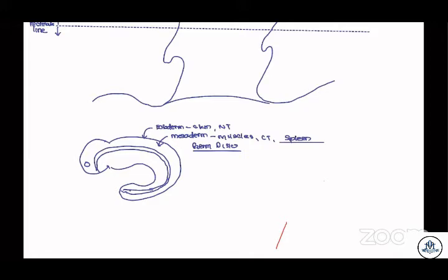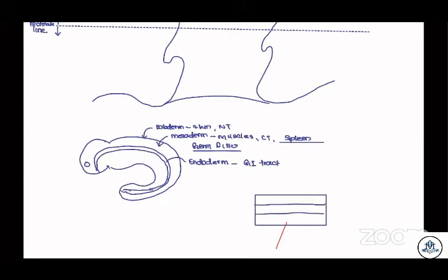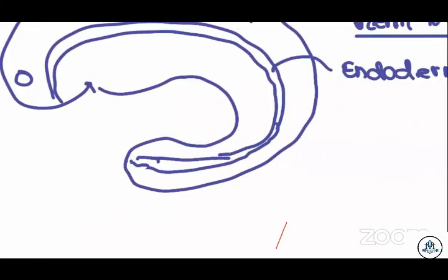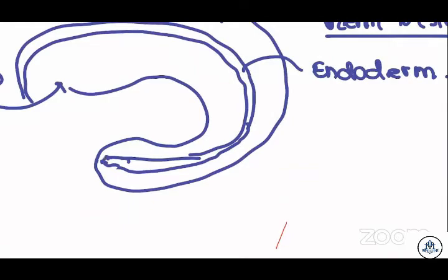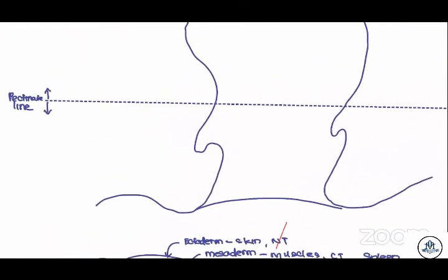The reason I mentioned the spleen is because the endoderm gives rise to the GI tract. There are three discs in embryology: ectoderm, mesoderm, and endoderm. The endoderm gives rise to the GI tract, but this section below the pectinate line is going to be from the ectoderm, and the section above is from the endoderm.